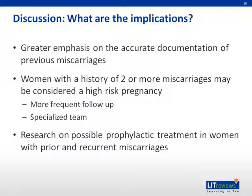The results from this paper suggest there should be greater emphasis on the accurate documentation of previous miscarriages. Women with a history of two or more miscarriages may be considered a high-risk pregnancy and should be seen more frequently by a specialized multidisciplinary team. Also, there should be further research on possible prophylactic treatment in women with previous and recurrent miscarriages to better increase their chances of carrying a current pregnancy to term.